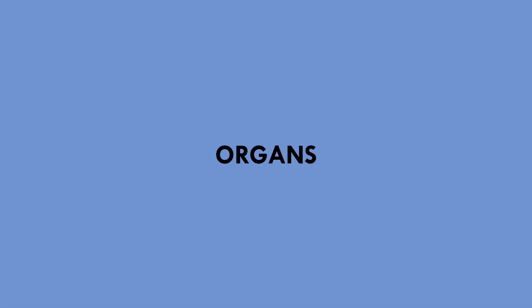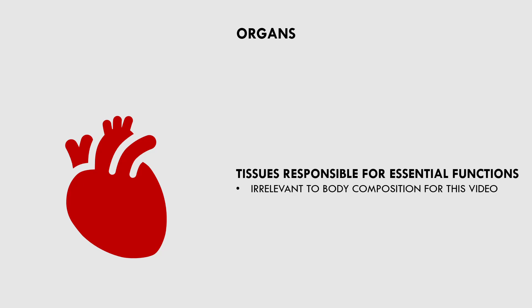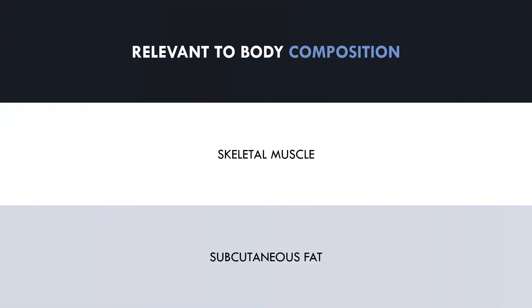The last tissue contributing to body composition is organs. This refers to the tissues responsible for essential bodily functions like digestion, hormone regulation, and breathing. This is almost completely irrelevant to body composition for this video, so we won't go into any details. However, we should understand that these are tissues in the body that technically contribute to our overall body composition. So while body composition involves many different tissues, we will only be talking about skeletal muscle and subcutaneous fat for the rest of this video series, as they are the most relevant for physique development and athletic performance.